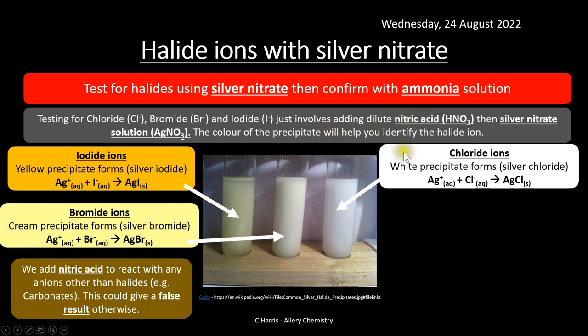Nitric acid is added to react with any other anions present — for example, carbonates — that could give a false positive result. The purpose of the nitric acid is to ensure that any positive result is due to a halide ion rather than another anion.